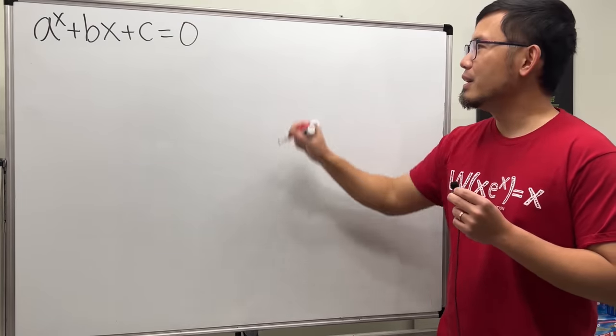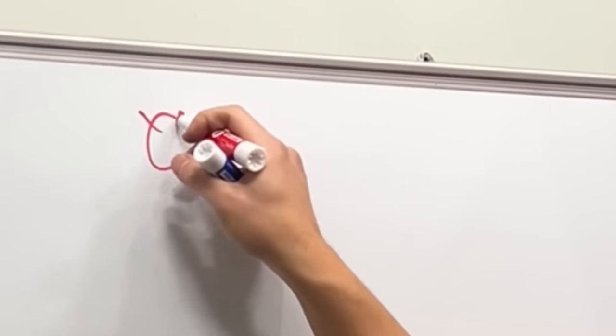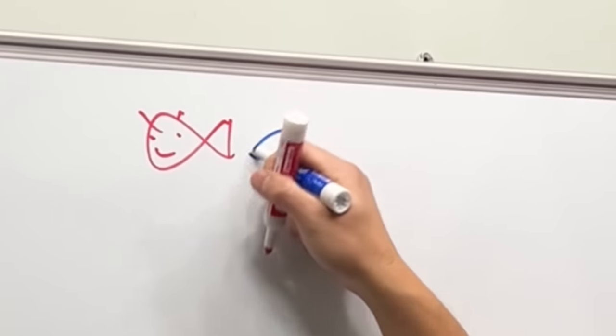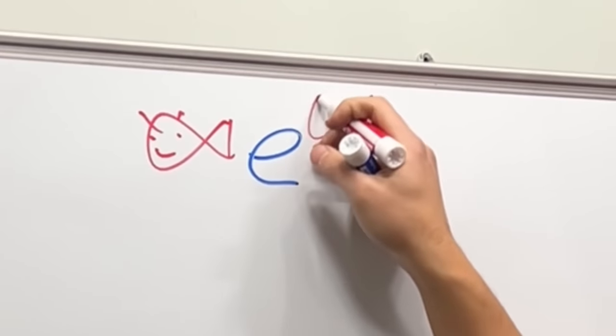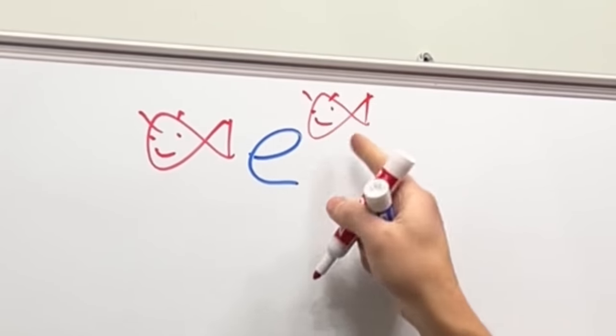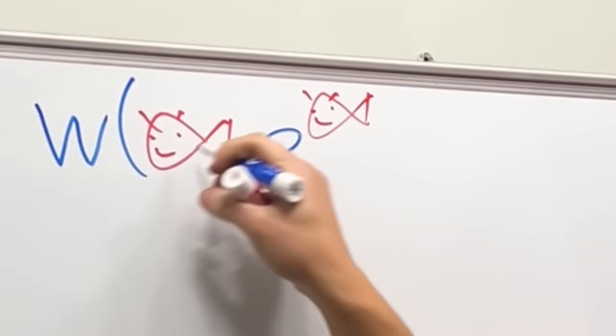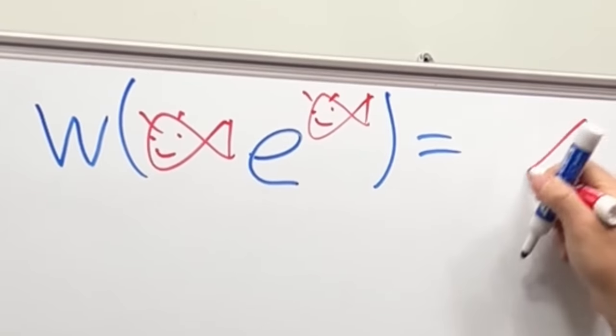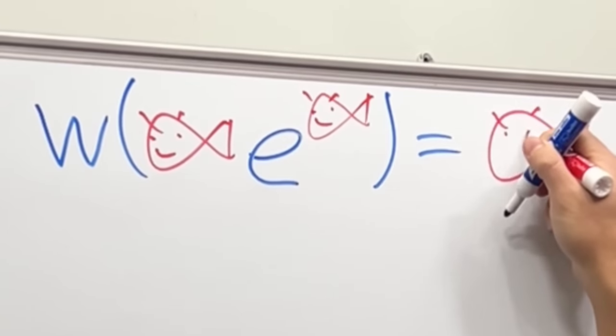So what it says is the following. If we have a fish times e raised to the same fish power, like this, they have to be the same. And then if you take the Lambert W function, you get the fish back. You can save the fish. That's all.